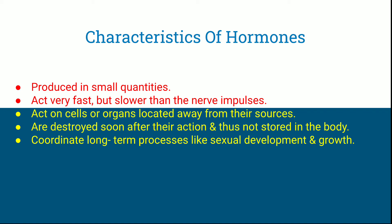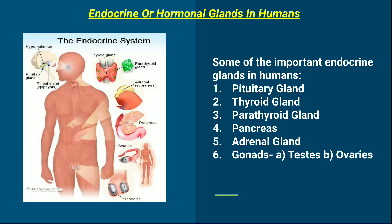Now we come to the endocrine or hormonal glands in humans. According to the syllabus, the glands we will discuss are: pituitary gland, thyroid gland, parathyroid gland, pancreas, adrenal glands, and gonads — that is, testes and ovaries. Besides these, there are two more glands — hypothalamus and pineal gland — which will be discussed in higher classes.